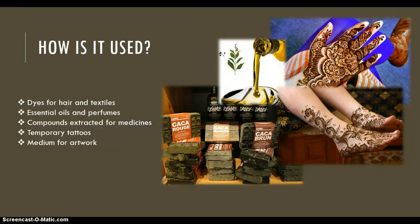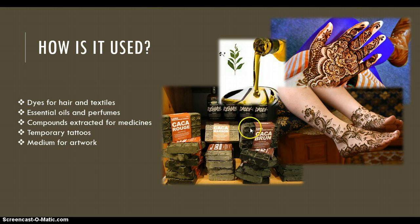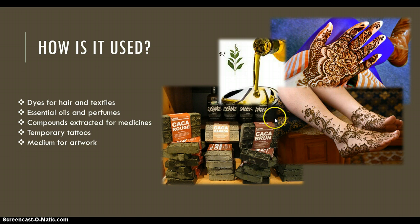And how is it used? We've got the essential oil, and then there's the hair dye — it's a solid compound that they mix with some sort of liquid, I believe water, and it turns into a pasty, muddy type substance that you put over your hair to dye it. And of course there are hand and feet temporary tattoos. So they're using it for dyeing hair and textiles, essential oils and perfumes, compounds extracted for medicines, temporary tattoos, and even as a medium for artwork.